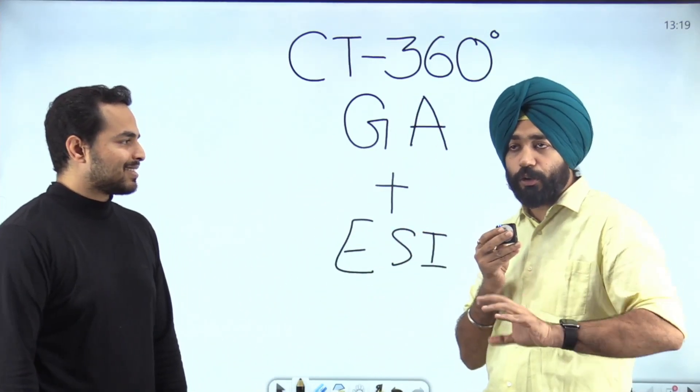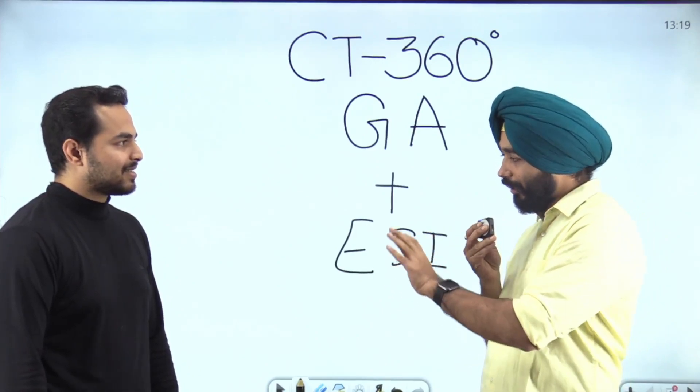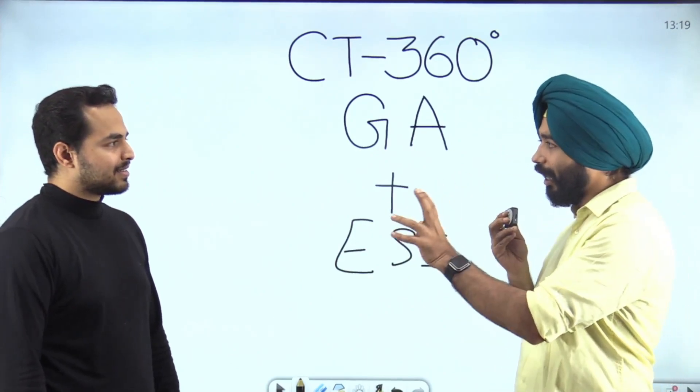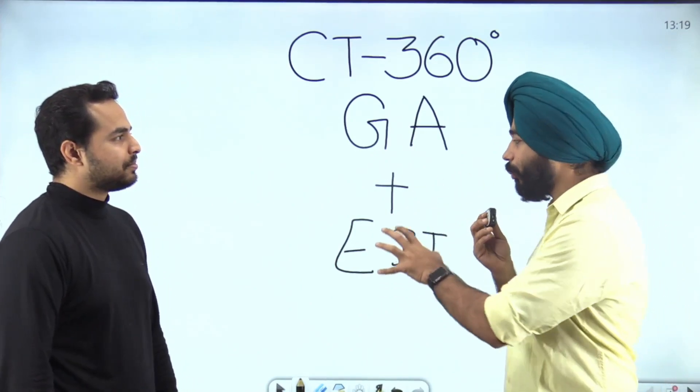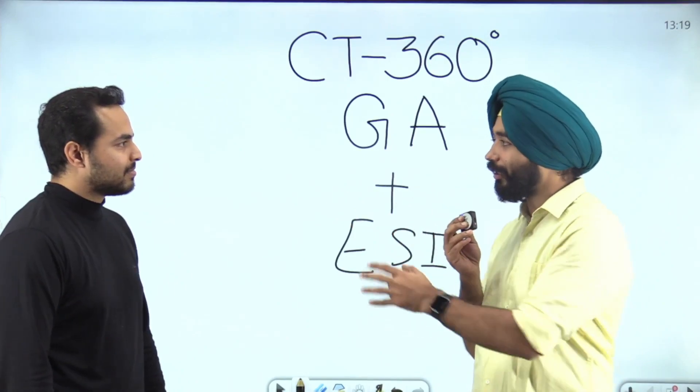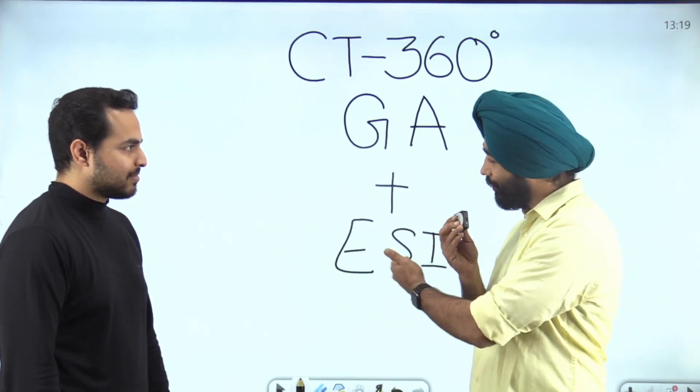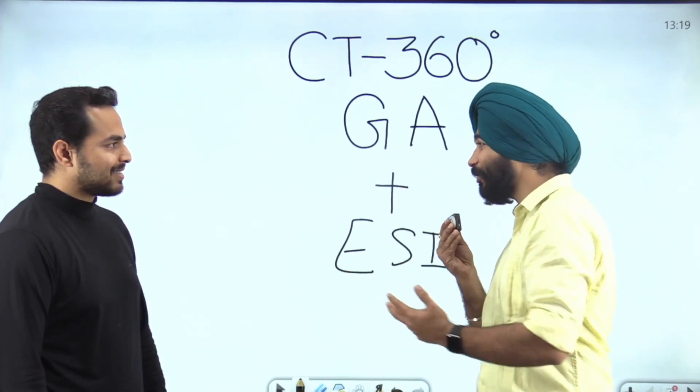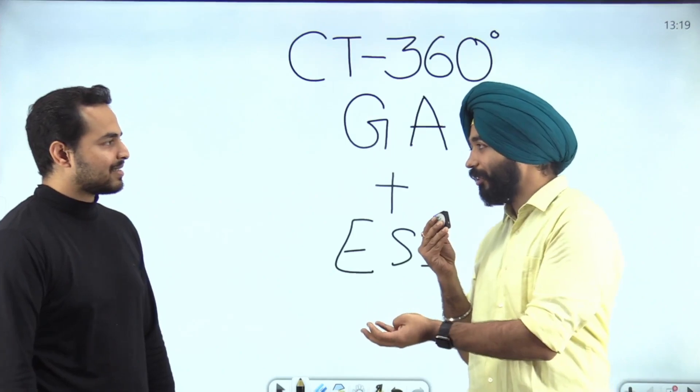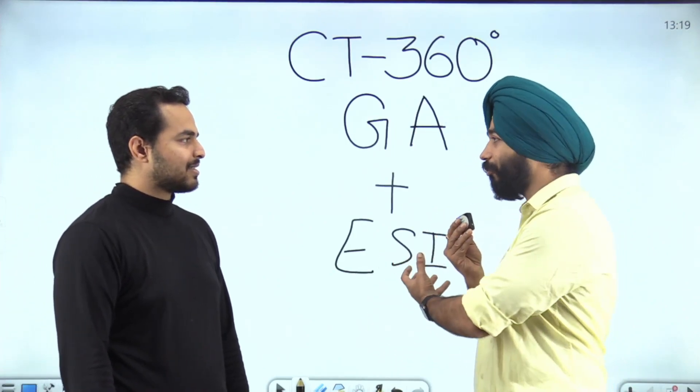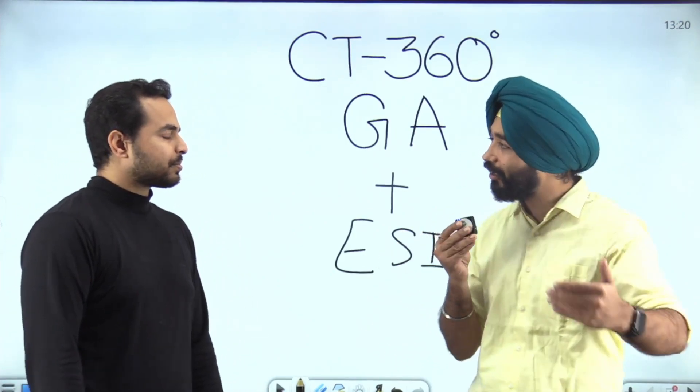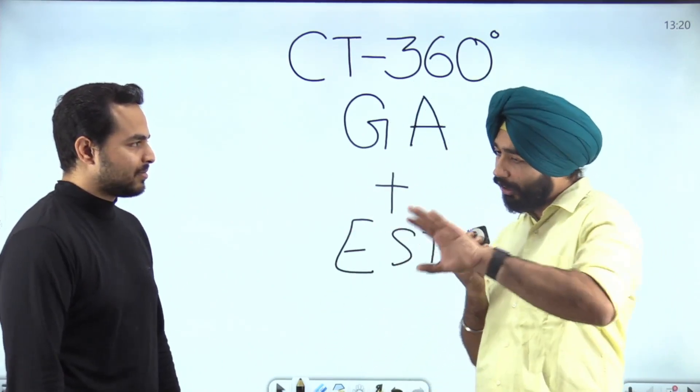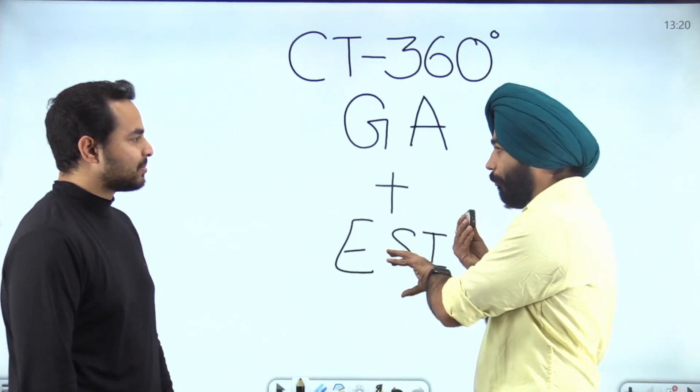ESI - Economic and Social Issues. You have a defined syllabus for that in the RBI notification, in NABARD also. For SEBI we don't have it, but this thing is important. There's a misconception that it's relevant only for phase two, but no. Schemes are part of ESI, reports are part of ESI, and news related to health, education, social justice, employment generation - they are part of economic and social issues defined in the notification. That part of news relevant for both phase one and phase two related to the syllabus is covered under economic and social issues.